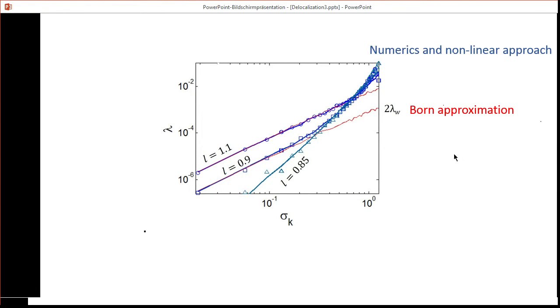We can show the agreement between the numerics and our non-linear approach, which is shown here with the blue dots, which are the non-linear approach, while the blue line is the exact numerics. We see that basically it follows very well all the way up to strong disorder, while the Born approximation shown here in red fails to describe the high disorder limit.